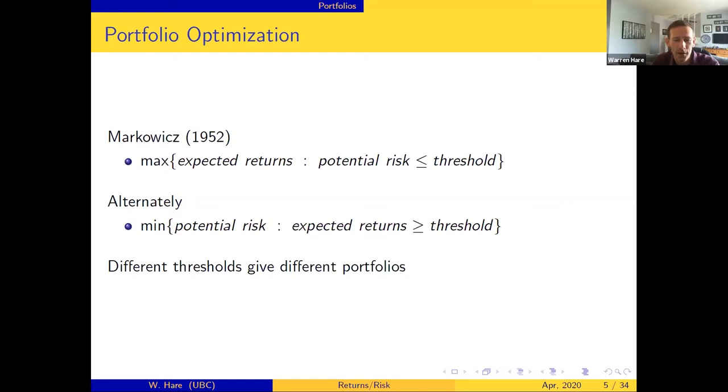Of course you can easily flip it, and that was done almost immediately, to say no you should minimize your risk such that your expected returns is greater than or equal to some threshold. One of the current standards is to just pick lots and lots and lots of different thresholds, giving you a whole bunch of different options. Every time you solve this problem with a different threshold you'll get a different portfolio, you look through all those portfolios and you make a decision through some process that's generally a little bit top secret.